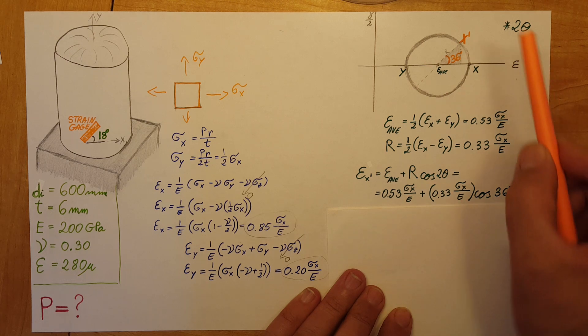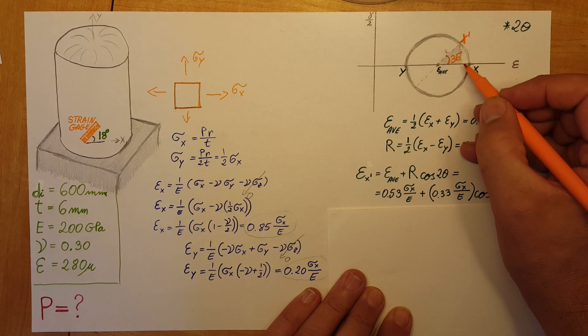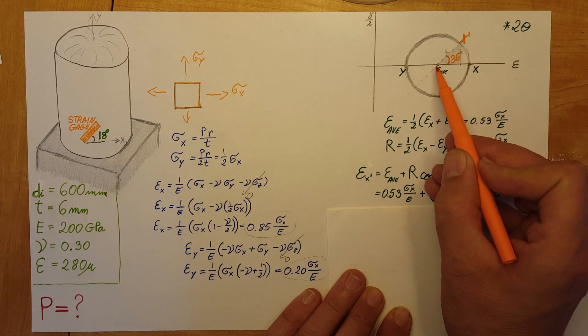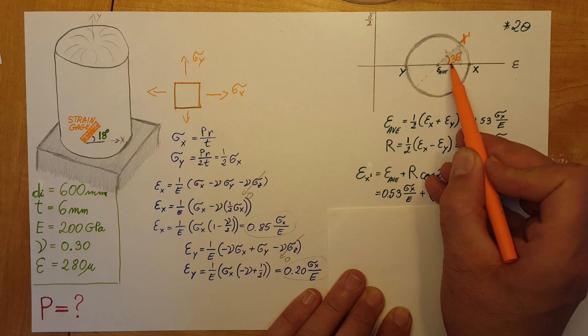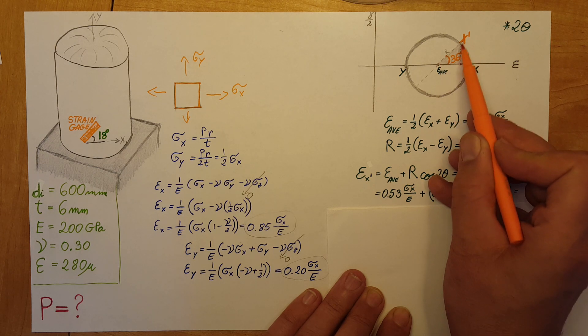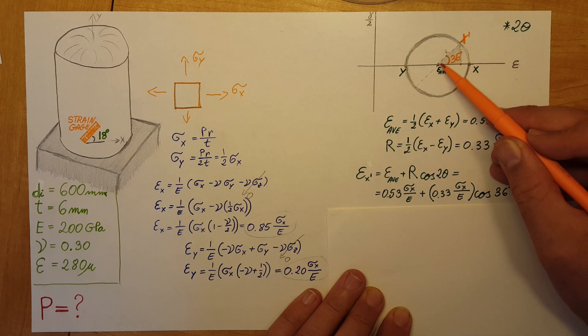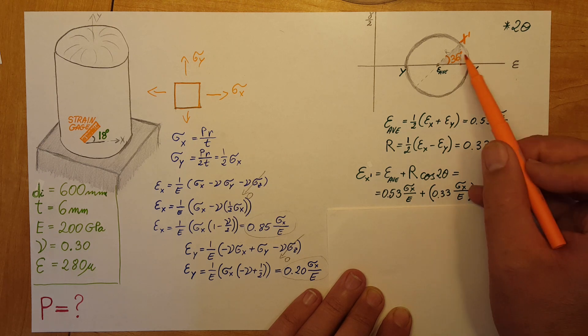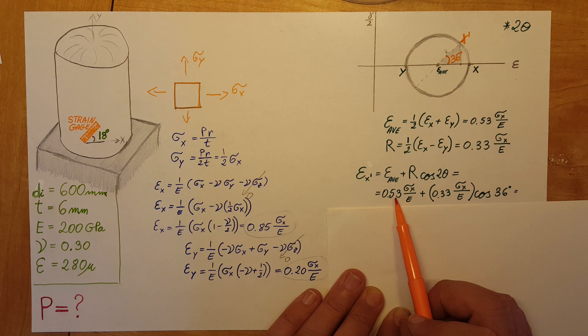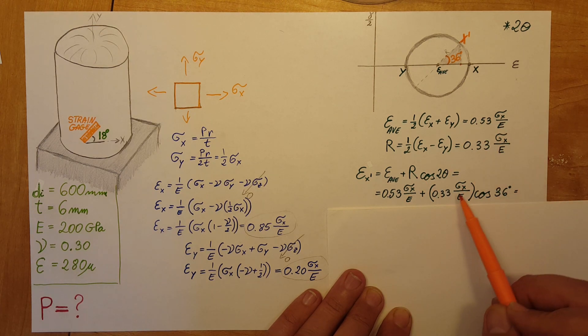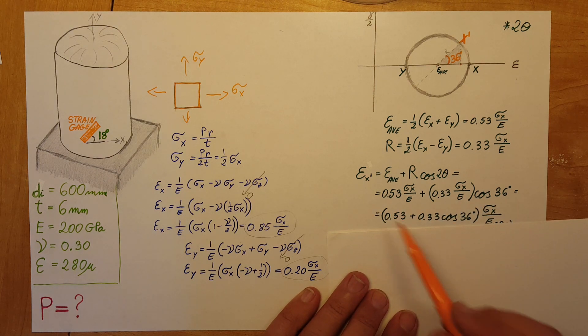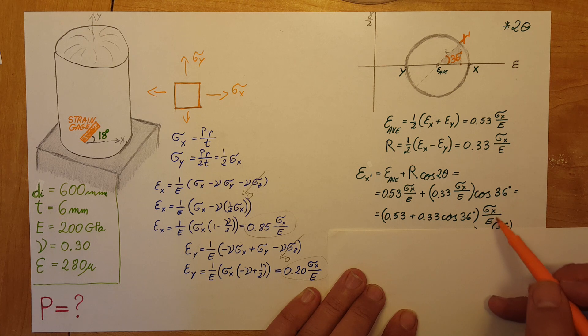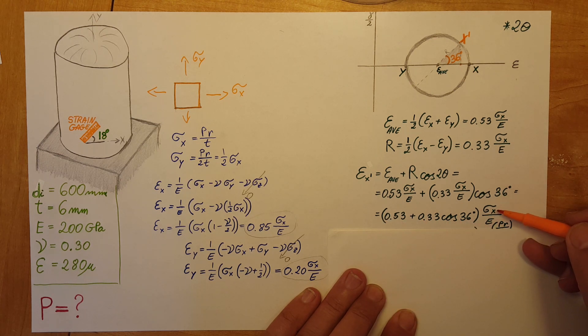Now, how can we calculate our new epsilon x, which would be here on this line? That would be epsilon average plus this section right here. This is a right triangle, so we calculate it by R times the cosine of 36. That's epsilon average plus R cosine 2 theta, where 2 theta for us is 36. I'll plug this in, then factor out sigma x over E. Now we have a nice number—these are all just numbers and we have sigma x over E.